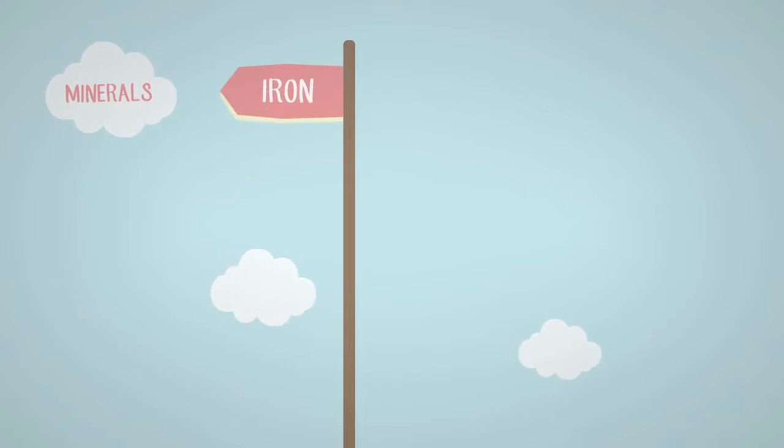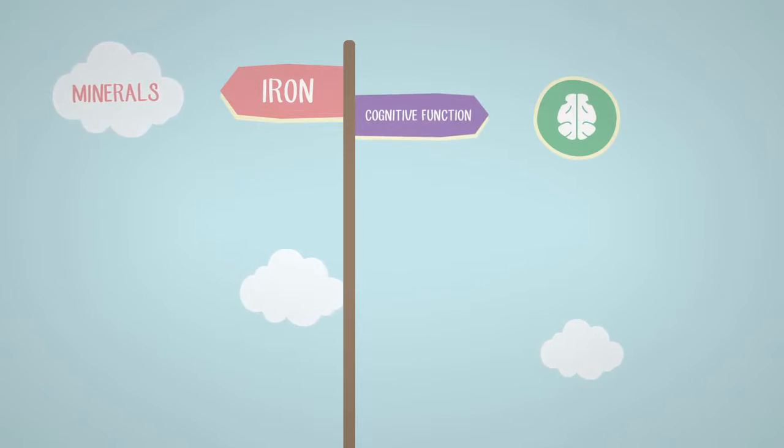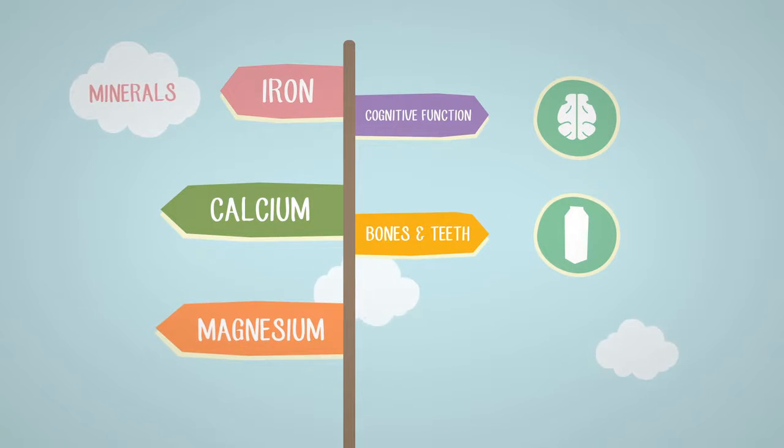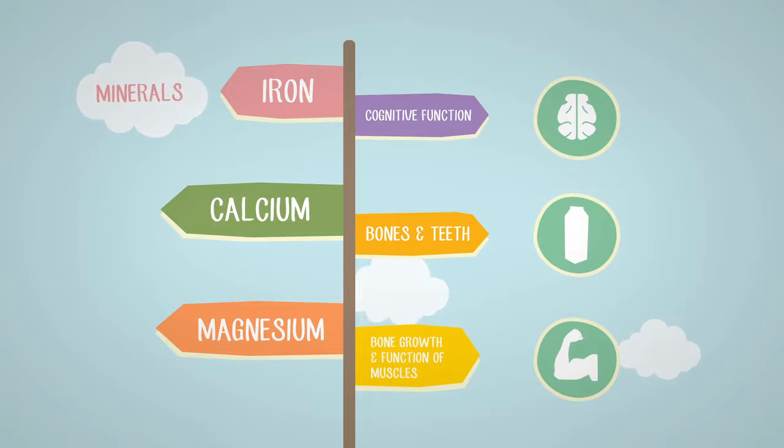Iron is essential for the development of normal cognitive function. Calcium is essential for making bones and teeth. Magnesium aids in bone growth and the function of muscles.